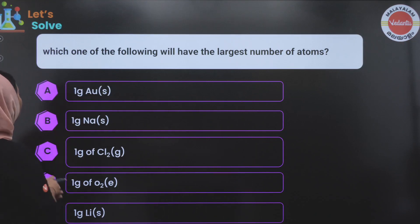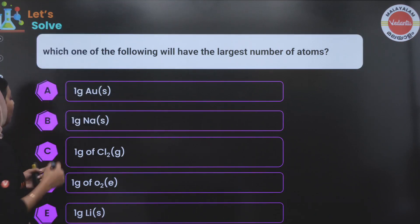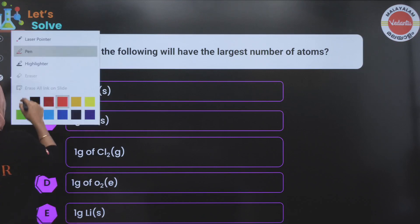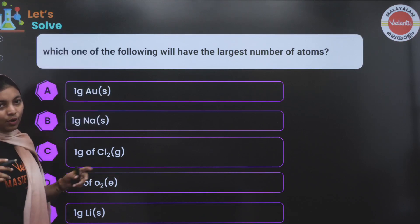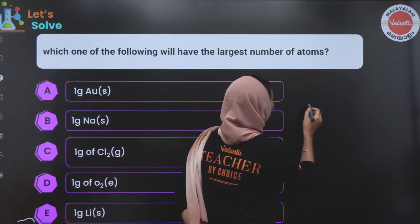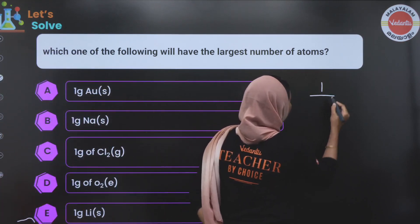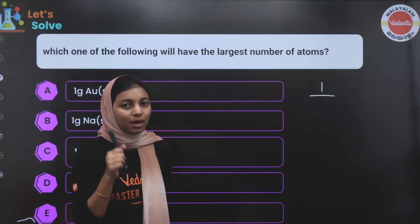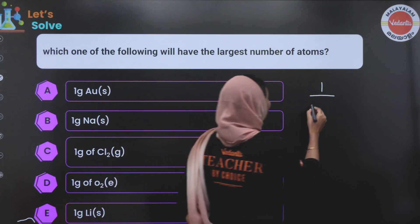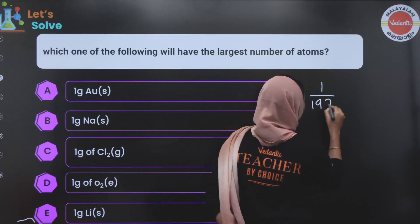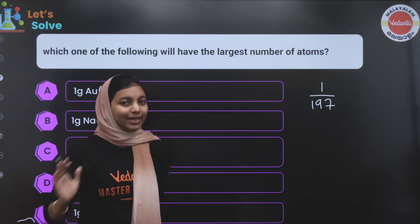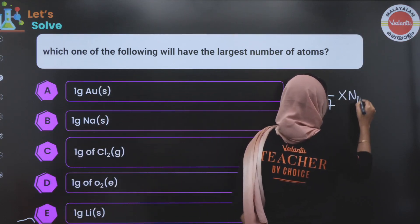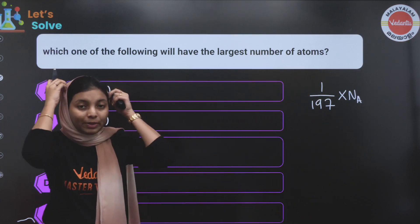The options are: 1 gram of gold, 1 gram of sodium, 1 gram of chlorine molecule, 1 gram of oxygen molecule, and 1 gram of lithium. Number of moles equals given mass divided by atomic mass or molecular mass. For gold: 1 divided by 197, because the atomic mass of gold is 196.9 — multiplied by Avogadro's number gives the number of atoms of gold.